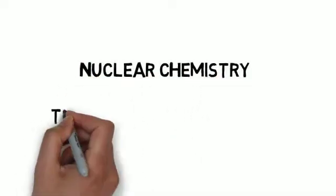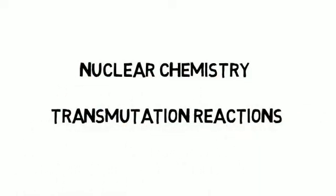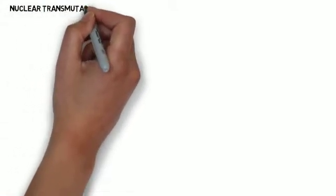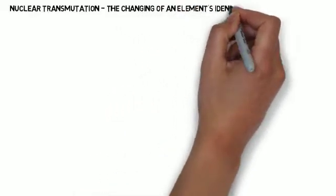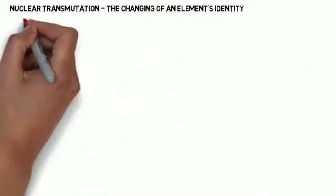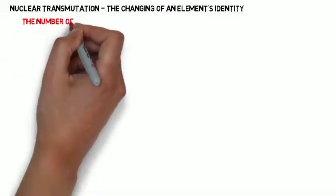Today we're going to talk about nuclear chemistry, specifically focusing on transmutation reactions. Nuclear transmutation is the changing of an element's identity from one element to another, or one isotope to a different element.